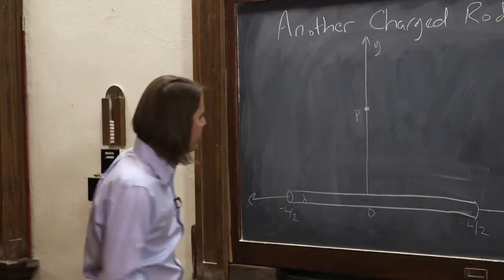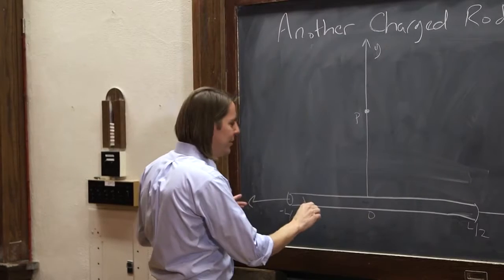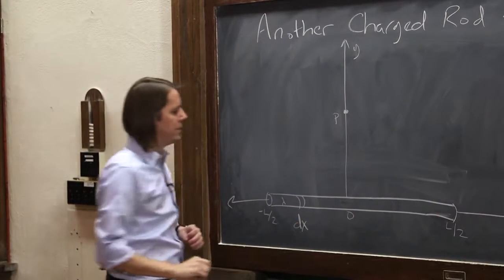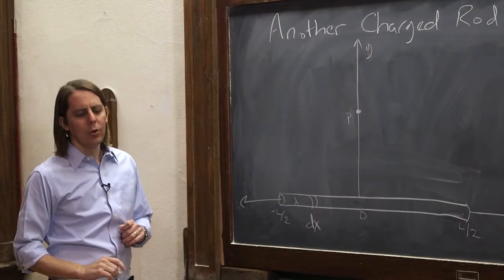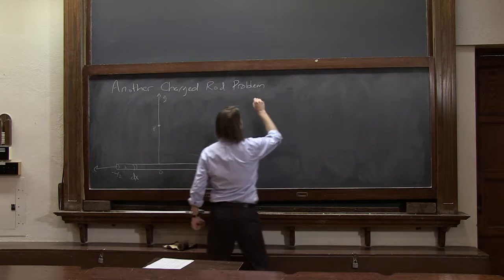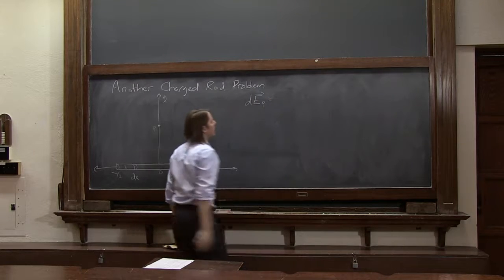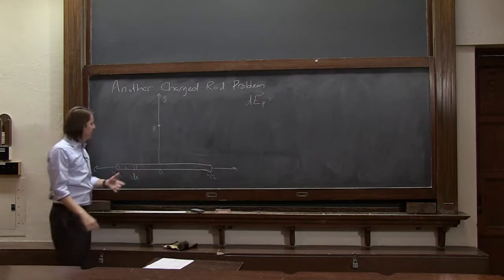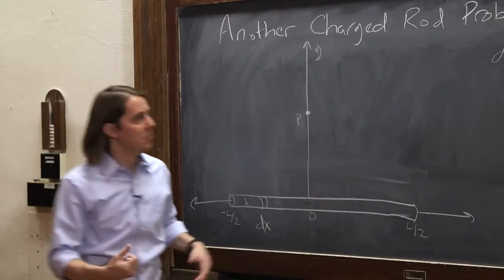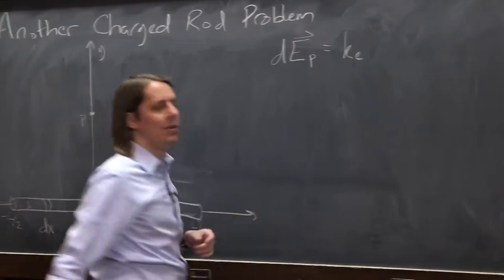It's the same trick. We're going to think of this charged rod as a bunch of little elements, dx. So here's one here, dx. And we're going to write dEP, just like before. We just have to start writing it and thinking about what it would be. Here is what we're treating as an isolated charge. Here's a point P. I'll start with the good part, ke.